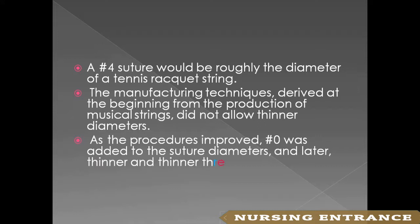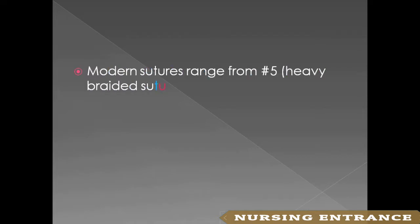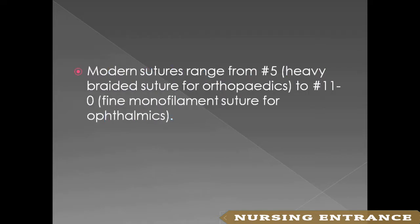The manufacturing technique, derived originally from the production of musical strings, did not allow thinner diameters. As procedures improved, 0 was added to the suture diameters. Later, thinner and thinner threads were manufactured, identified as 2-0, 3-0, or 6-0 — written as 000000.